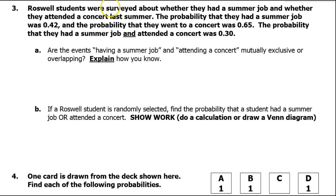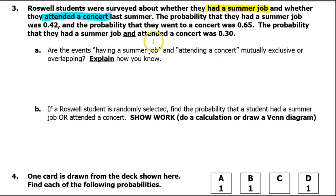Looking at problem number three, Roswell students were surveyed about whether they had a summer job and whether they attended a concert last summer. Those are the two events: had a summer job and attended a concert. Is it possible to do both of those things during the same summer? Sure — some students had a summer job and attended a concert last summer. So since both of those can happen to the same person, these are overlapping events; they are not mutually exclusive.